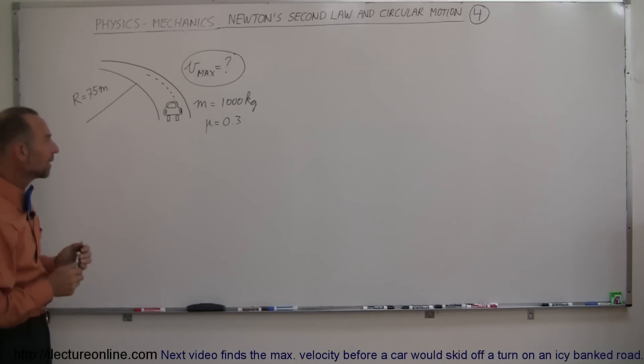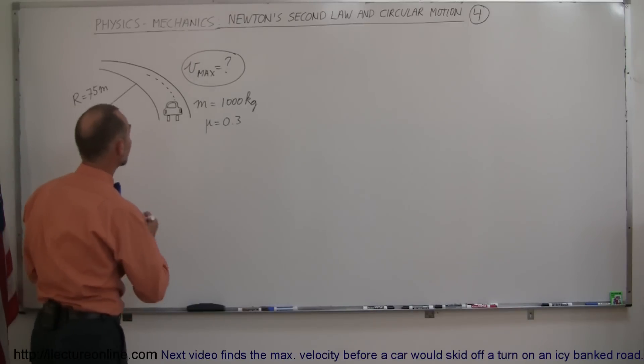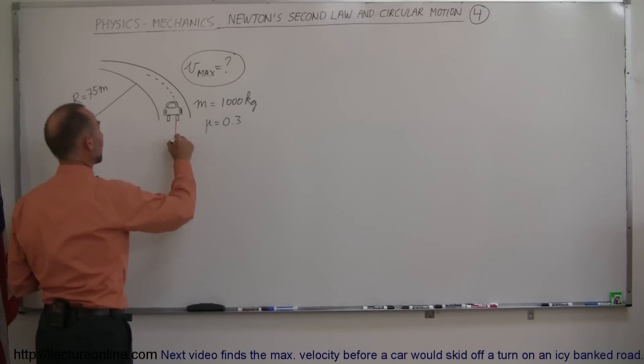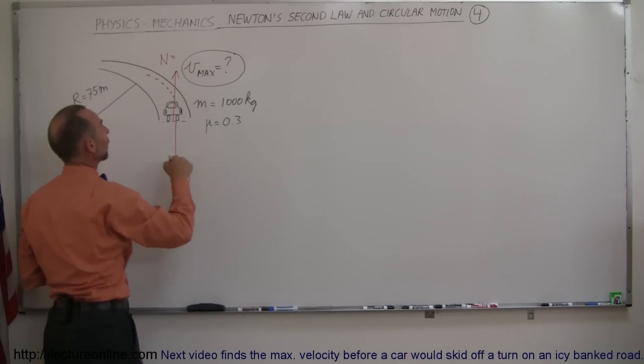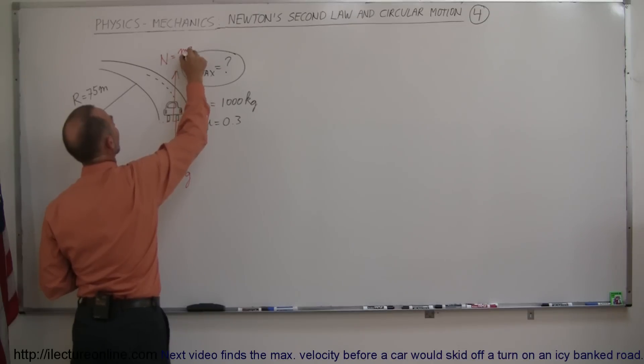One way to think about it is this: What is keeping the car on the road? It would be the friction forces between the tire and the road. To find those, start with the fact that the car has weight, which is mg. That means the road will be pushing back on the car with a normal force n, which is the reactionary force to the weight, equal to mg.